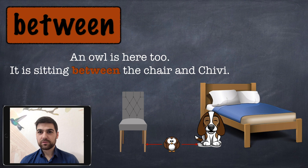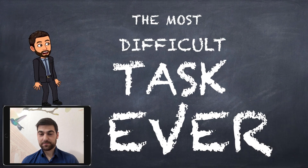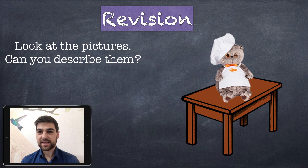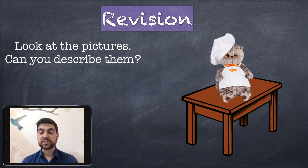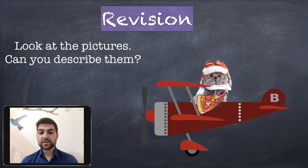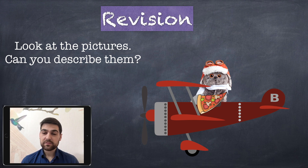Now let's revise all the pictures and see if you remember them. Where is the cat? The cat is on the table. Where is the cat eating pizza? The cat is eating pizza in the plane.